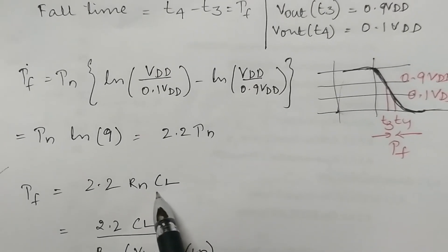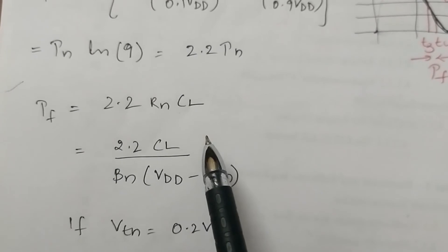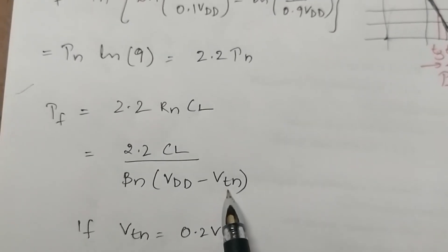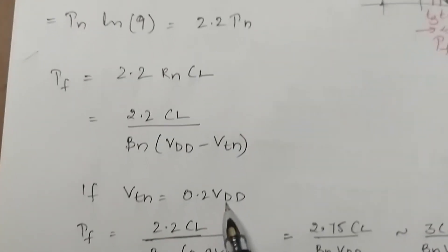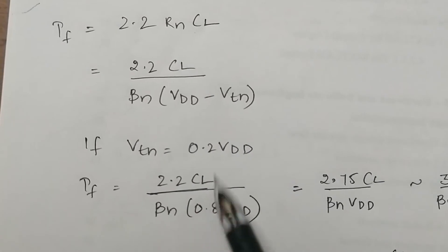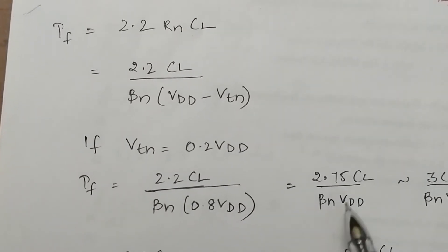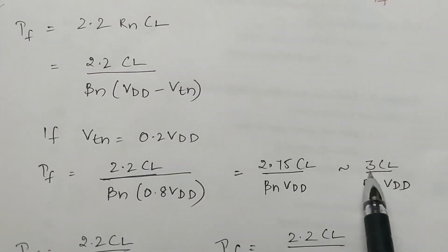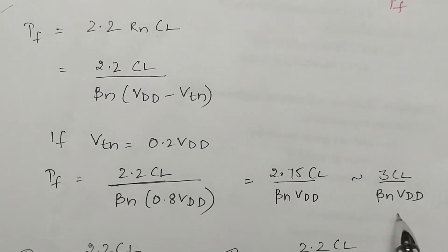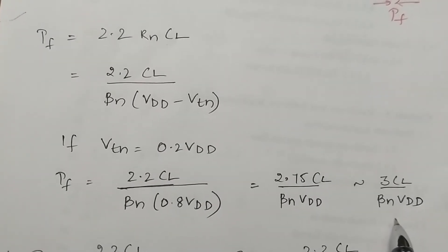Replacing τn with Rn·CL, and Rn with 1/(βN·(VDD − VTN)), and assuming VTN = 0.2·VDD: τF = 2.2·CL/(βN · 0.8·VDD) = 2.75·CL/(βN·VDD), approximated as 3·CL/(βN·VDD) — the same expression obtained using the previous method.